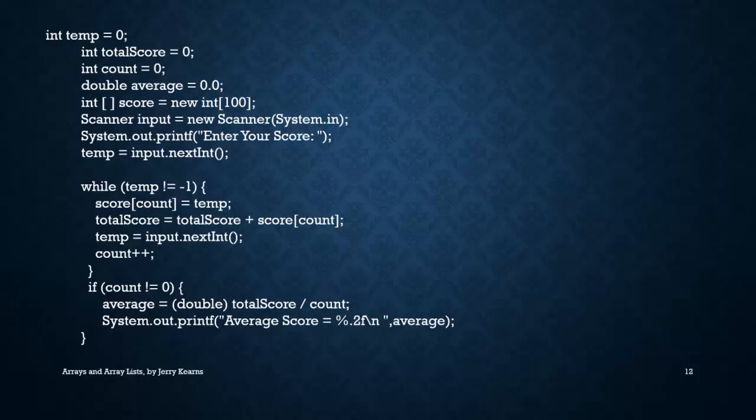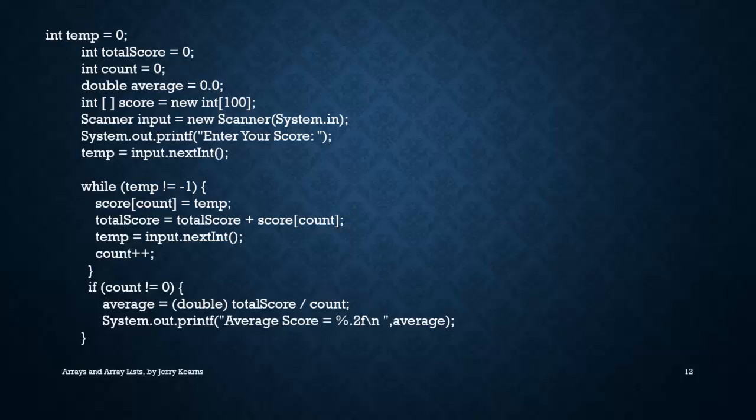And then we print out the average. So just summarizing, this now gives your grading program a lot of flexibility and power. You can very simply get a large number, indeterminate number of test scores, use a very small number of variables, and later on you can search through the array, which we'll be discussing at a later point, and for example find the lowest score or the lowest number of scores and subtract those from the total score and calculate a new average. So thanks very much, see you next time on arrays part two.